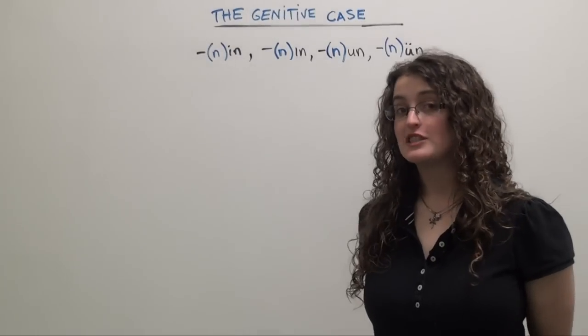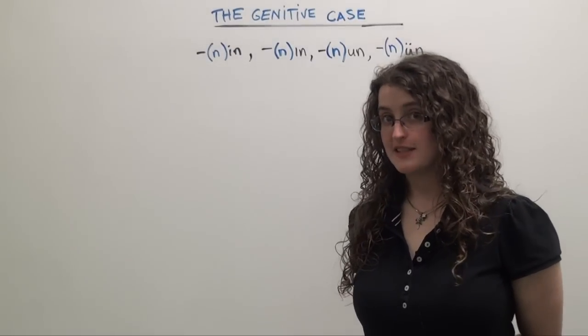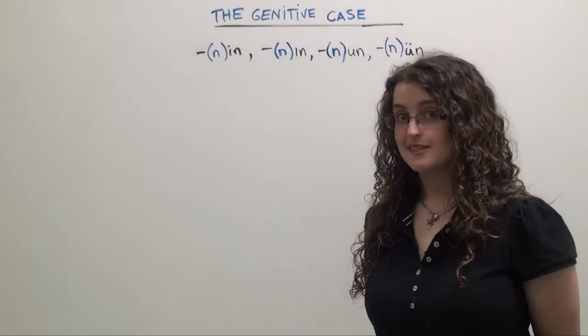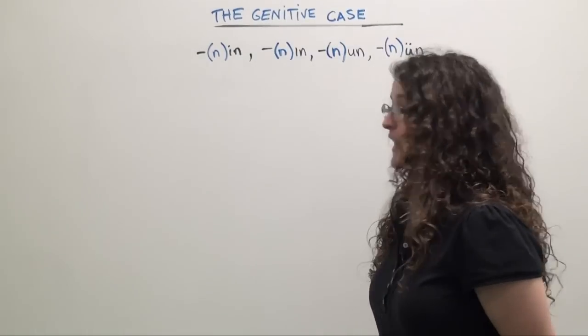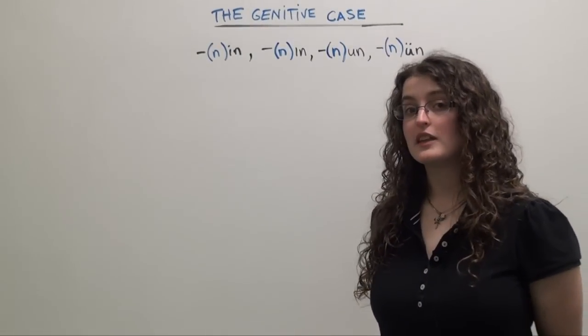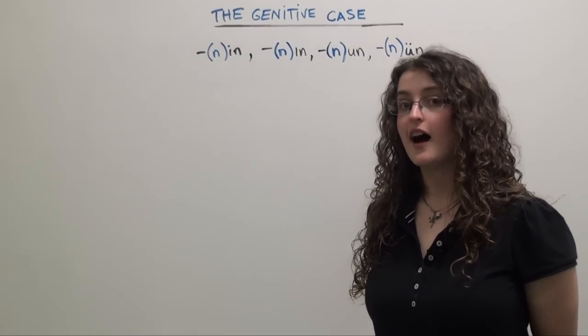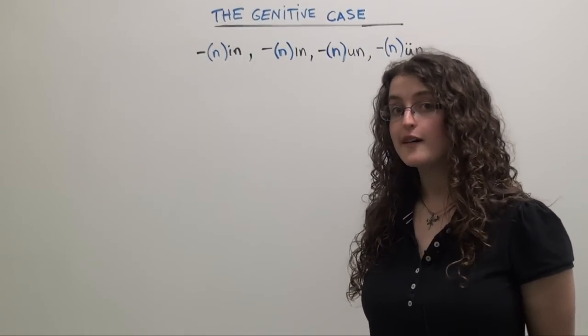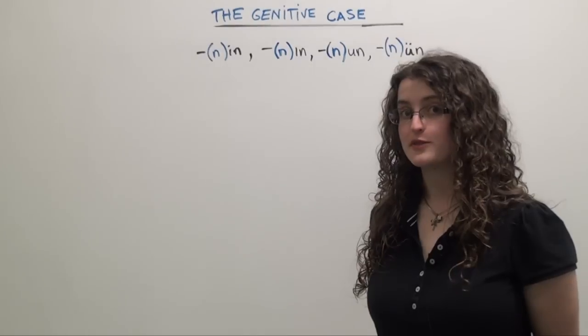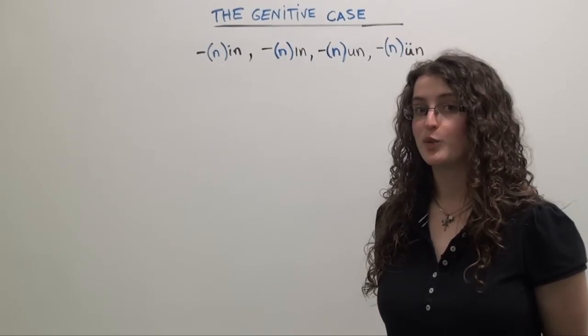Now we're going to talk about the genitive case in Turkish. The genitive case is a set of endings that are the equivalent of the English phrase 'of' or 'of the,' and you add them directly to a Turkish noun or pronoun.